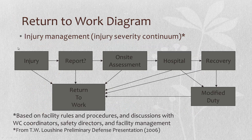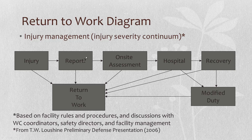Here's a return-to-work diagram I created for my dissertation when I was in grad school. Basically: an injury occurs — is it reported? Can we do an on-site assessment, or does the person have to go to the hospital? Do they have to stay home and recover? Can they come back on modified duty? The goal is always returning the person to work. This is kind of a continuum on severity — if the person has to stay home for a long time, it's more severe. We need to evaluate where the exposure occurred and control it, putting more weight into the more severe cases.